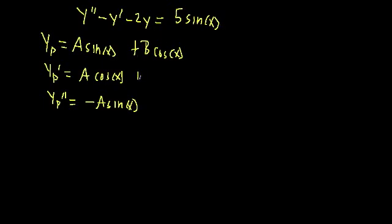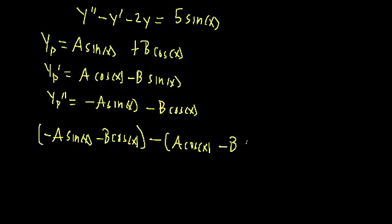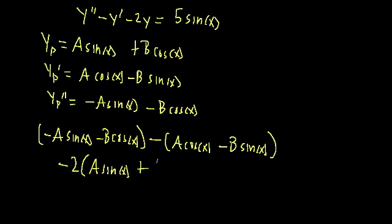Let's try y_p = A sin(x) + B cos(x). The derivative of the cosine part gives −B sin(x), and the second derivative gives −B cos(x). Plugging all derivatives into the differential equation: [y″] = −A sin(x) − B cos(x), minus [y′] = A cos(x) − B sin(x), minus 2y = 2A sin(x) + 2B cos(x), all equal to 5 sin(x).